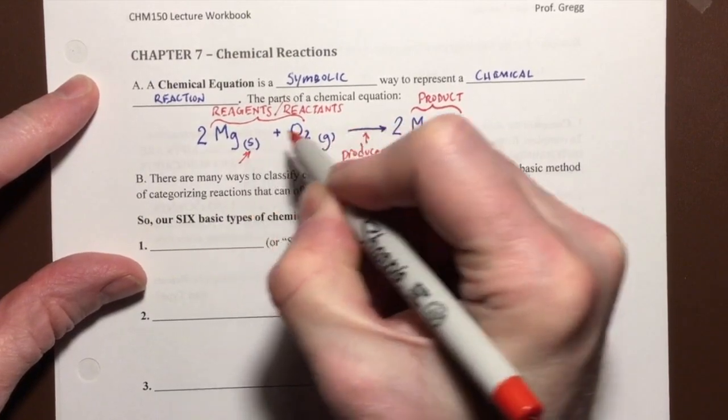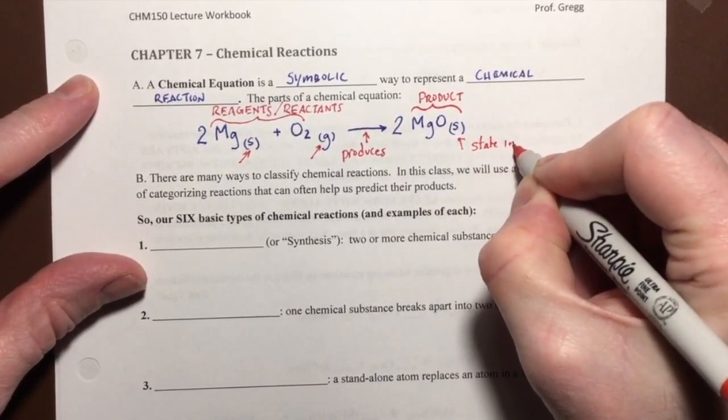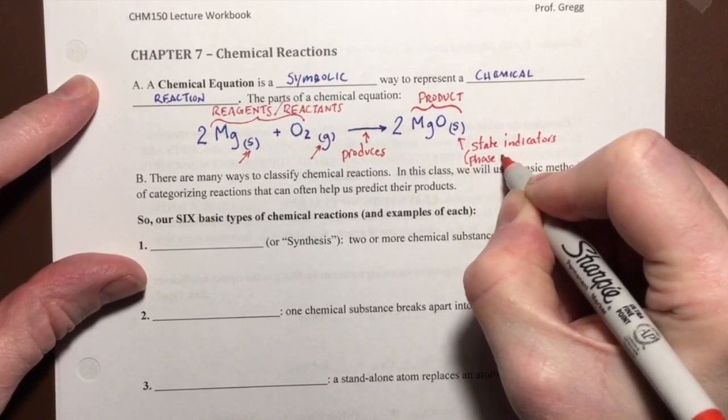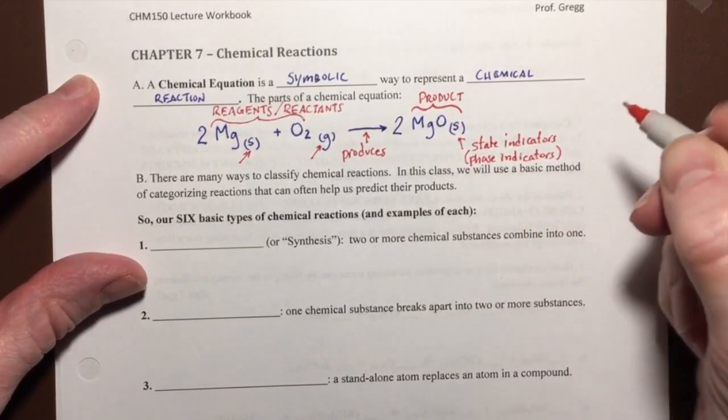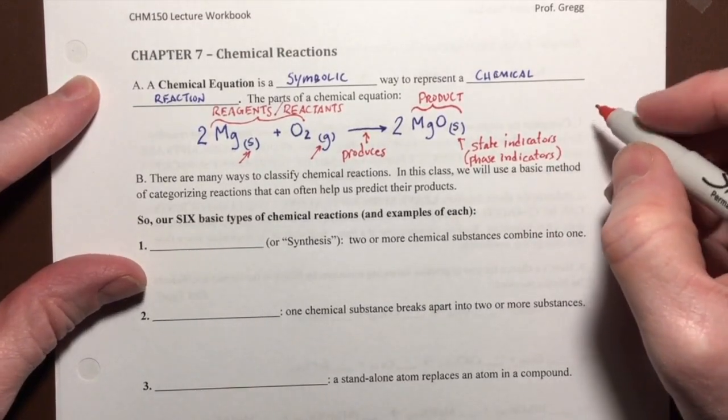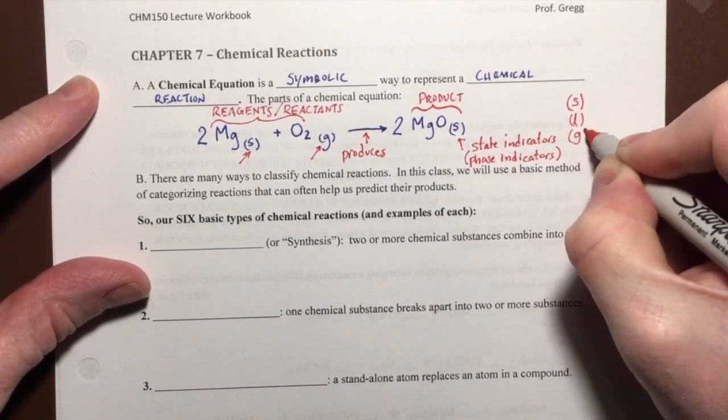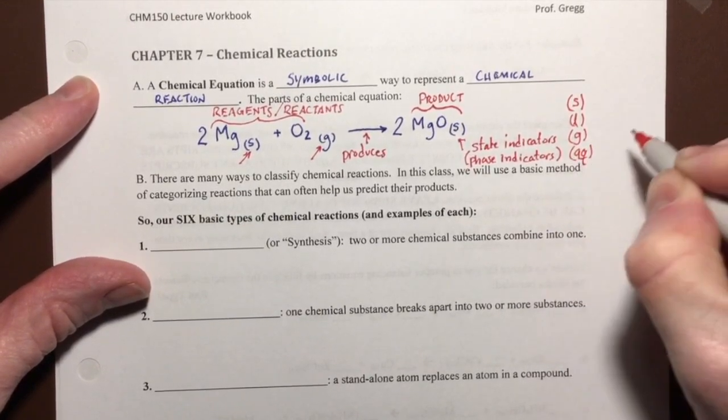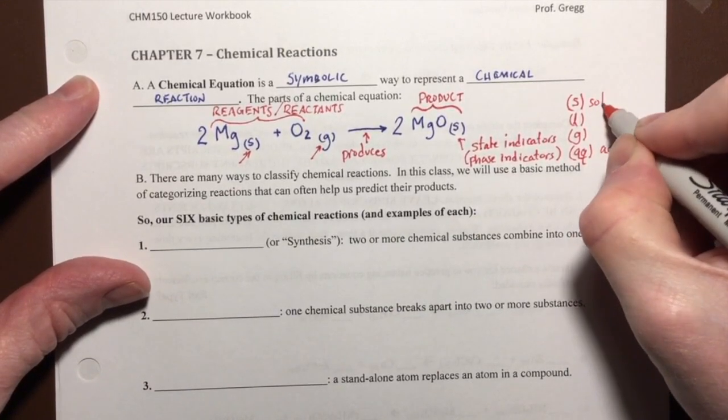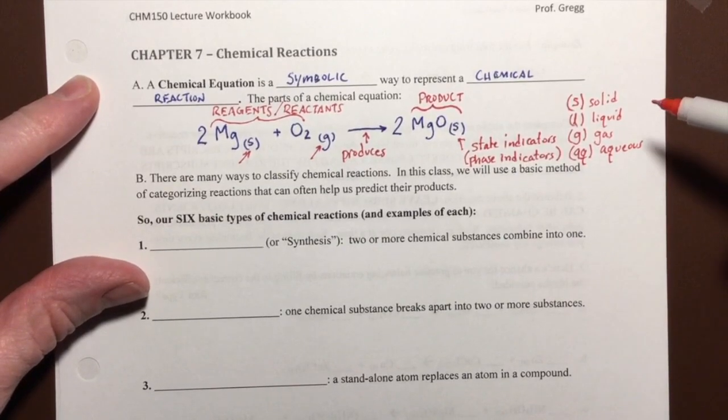We have these symbols here in parentheses, called state indicators or phase indicators, because they indicate the physical state or phase of the species. There are a few that are important to us: solids, liquids, gases, and AQ, which represents aqueous solutions or that it is dissolved in water. Those are the main phase indicators or state indicators we need to be familiar with.